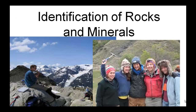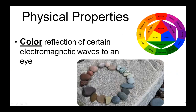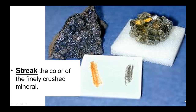Geology has a strong tradition of work in the field. Identification of rocks and minerals starts in the field; however, today more and more of the identification is finalized in the lab using techniques and equipment not available in the field. I have compiled a list of the main identification methods used in the field. First is probably color — of the physical properties, color is very easy to determine; it's a reflection of certain electromagnetic waves to an eye. Streak is another test used quite commonly. It's the color of the finely crushed mineral. You use this ceramic-like material and scratch the rock against it and it leaves a streak. The streak helps you identify the mineral, as its color differs for different types of minerals in the rock.